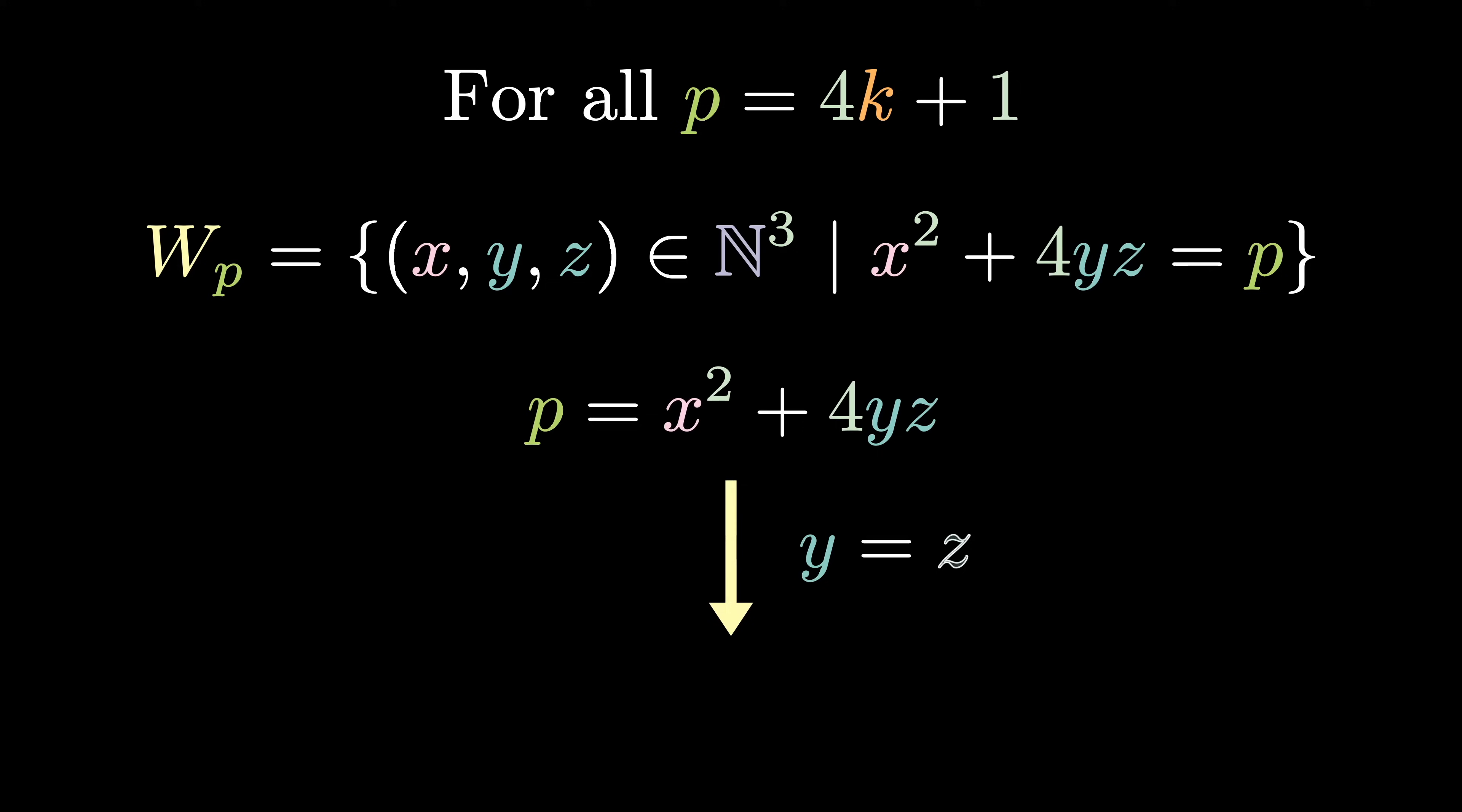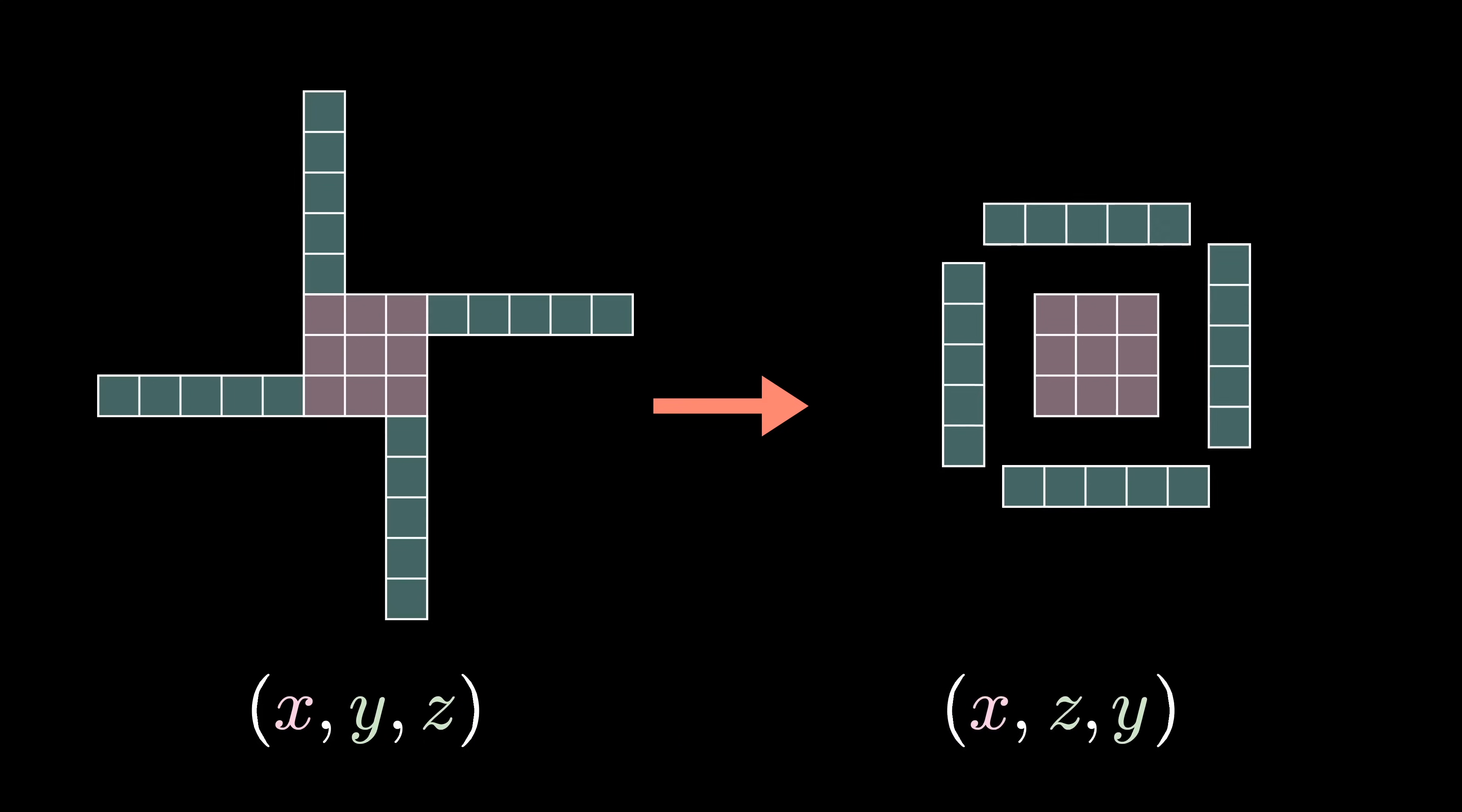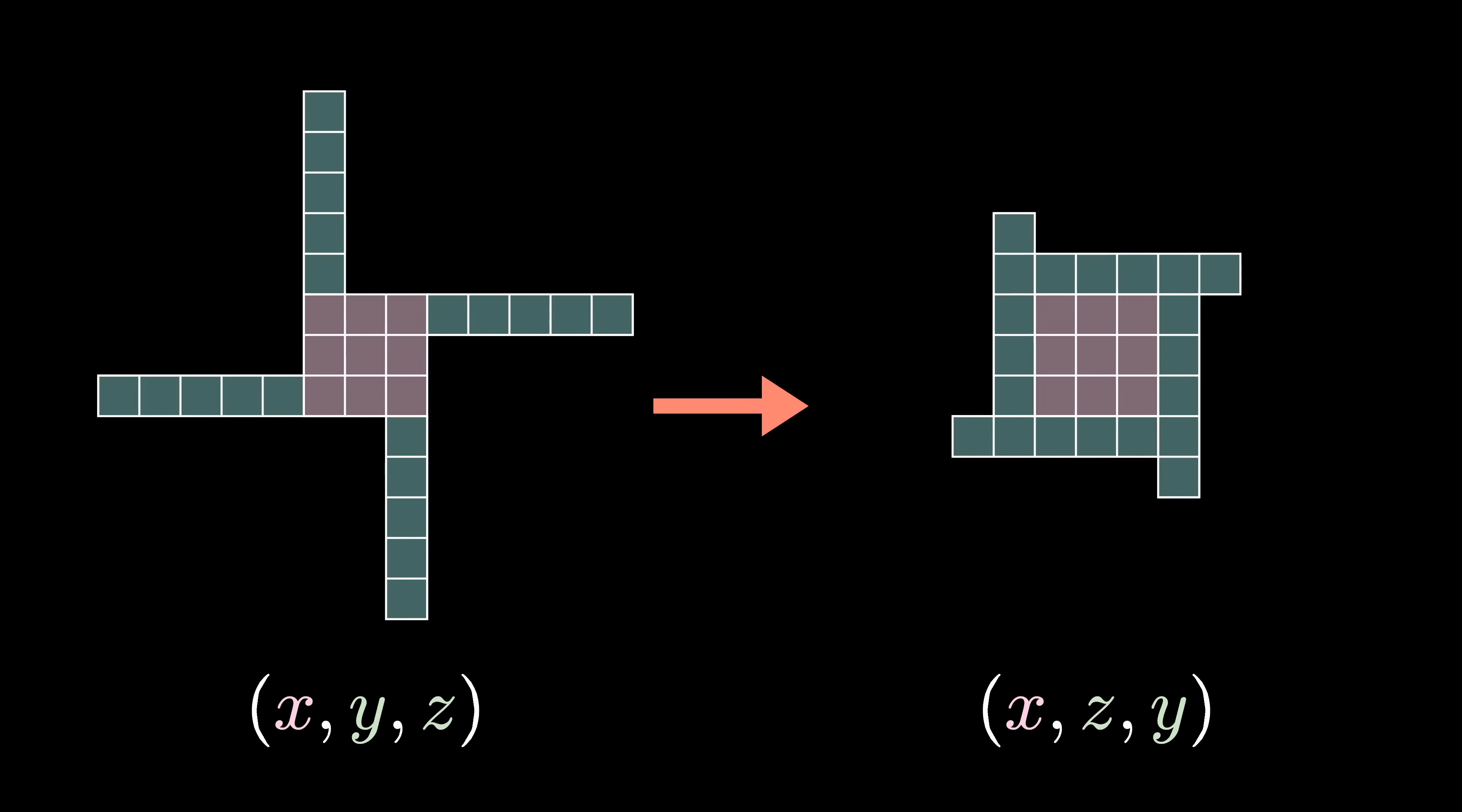Let's remember when we first talked about windmills, I said that if I could find a windmill of a prime p = 4k+1 such that y = z, then we'd have solved the original problem. Now consider a windmill that the flip map maps to itself - a fixed point. What can you say about this windmill? Well, since y and z switch places, y must be equal to z. Now we've transformed the problem again. Instead of trying to prove that a prime p of the form 4k+1 can be broken down into two squares, we're trying to prove that a fixed point does exist when applying the flip map.